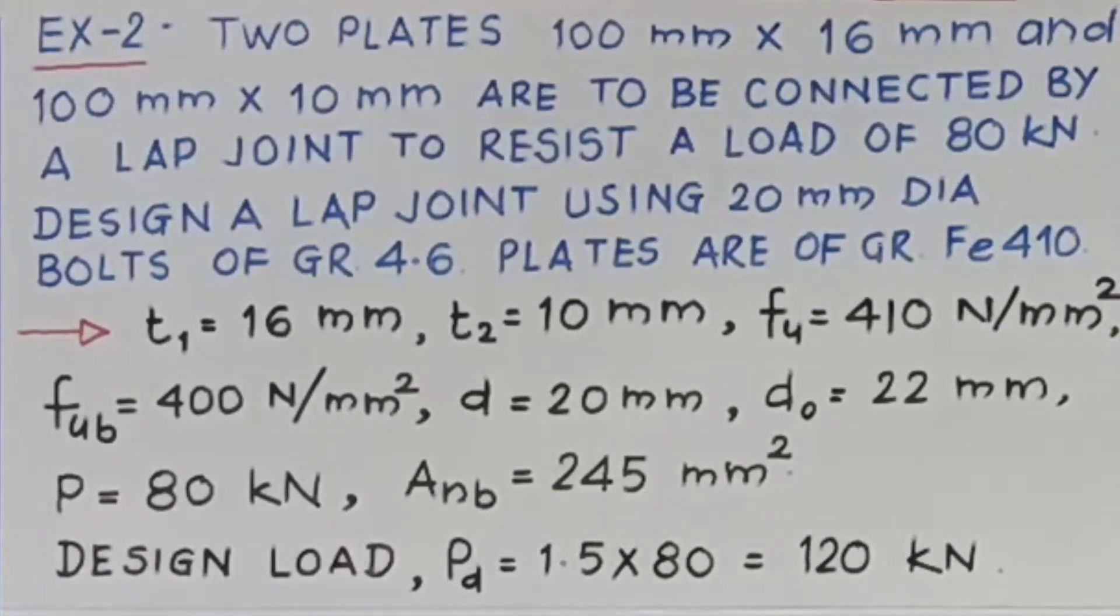Let us see what are the things given. T1 is 16, T2 is 10, Fu is 410, FUB is 400, 4.6, so 400. Diameter of nominal diameter of bolt is 20 mm, so diameter of hole is 20 plus 2, that is 22 mm. Working load is given as 80 kilonewton and net area at the root of the threads is 245 for 20 mm diameter, that we know.